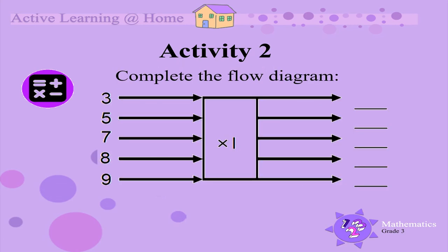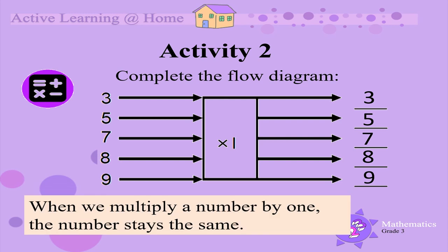Activity 2: Let's complete the flow diagram together. Three times one is three. Five times one is five. Seven times one is seven. Eight times one is eight. And nine times one is nine. When we multiply a number by one, the number stays the same.